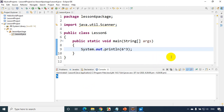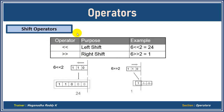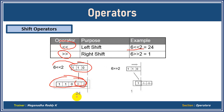Now we'll see shift operators. Again, for more detail check the description section links. This is the left shift operator and this is the right shift operator. To find 6 left shift 2: convert 6 to binary — this is the binary equivalent of 6 — then push it to the left side and add two zeros, then convert the total back to decimal.